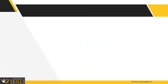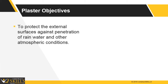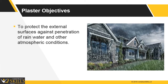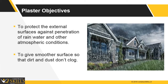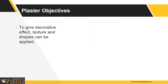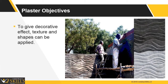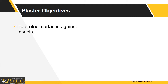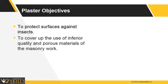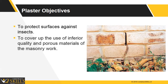Plastering work is performed to achieve various objectives. The most common reason is to protect the external surface from penetration of rainwater and from other atmospheric conditions. It can be provided to give a smoother surface so that dirt and dust don't clog on vertical surfaces. It can be applied to give a decorative effect, and various textures and shapes can be rendered on plaster. It can also provide protection against insect penetration and cover up inferior quality members of masonry work.